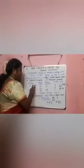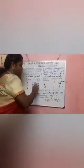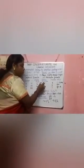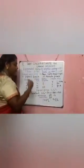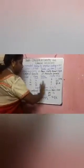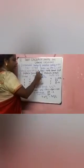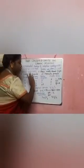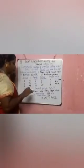Now find the simplest ratio from the relative number of atoms: X = 2, Y = 1, Z = 0.5. Since 0.5 is not a whole number, multiply all by 2: X gives 4, Y gives 2, Z gives 1. So the simplest whole number ratio is 4:2:1, and the empirical formula is X₄Y₂Z₁.